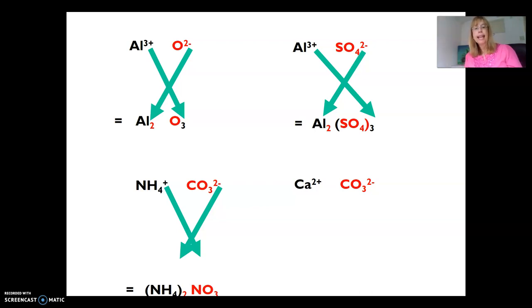Next, ammonium carbonate: one's 1+, the other's 2-, giving me (NH4)2CO3. I need brackets because I have two ammoniums. For calcium carbonate, they're both 2+, 2-, so they cancel out and I write it as CaCO3.